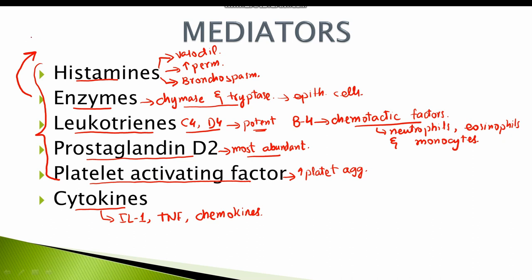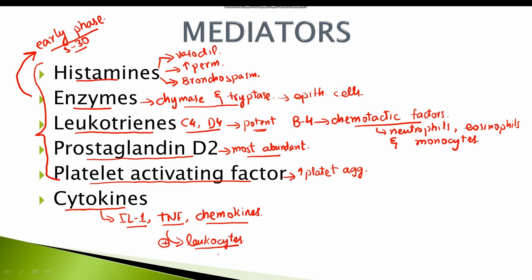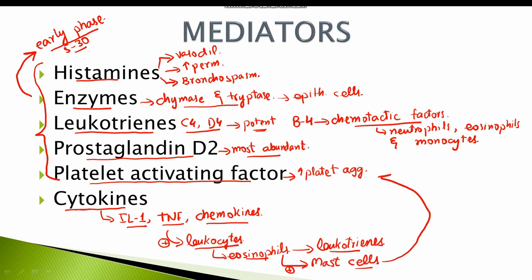Type 1 hypersensitivity reaction has two phases: the early phase and the late phase. The early phase is caused by all these mediators and typically starts to appear within 5 to 30 minutes of exposure, lasting up to 60 minutes. Once the early phase is over, cytokines including interleukin-1, tissue necrosis factor, and chemokines recruit leukocytes, the most important of which are eosinophils. These eosinophils produce leukotrienes which add to all the mediators released by the mast cells, and also activate the mast cells again, resulting in the late or delayed phase of type 1 hypersensitivity reaction, which typically arises after 2 to 24 hours.